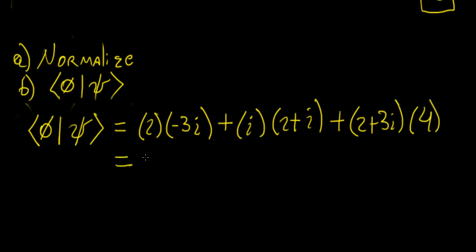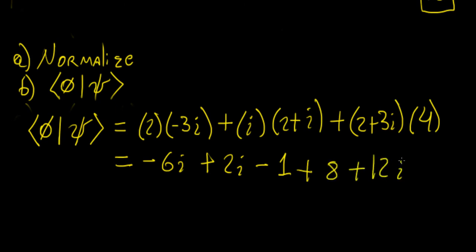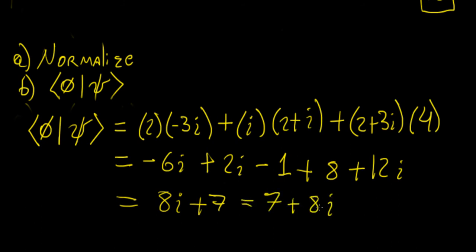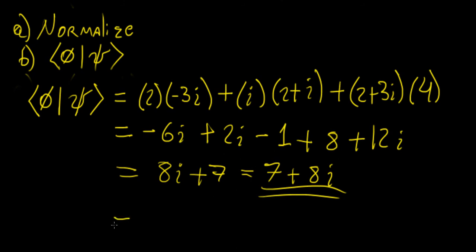Expanding: the first term is −6i, the second term gives 2i + i² = 2i − 1, and the third gives 8 + 12i. Collecting real parts: −1 + 8 = 7. Collecting imaginary parts: −6i + 2i + 12i = 8i. So the inner product is 7 + 8i. Including the normalization constants — since we can factor them out and square them — the normalized version is (1/√30)(1/√18)(7 + 8i), which simplifies to (7 + 8i)/30.